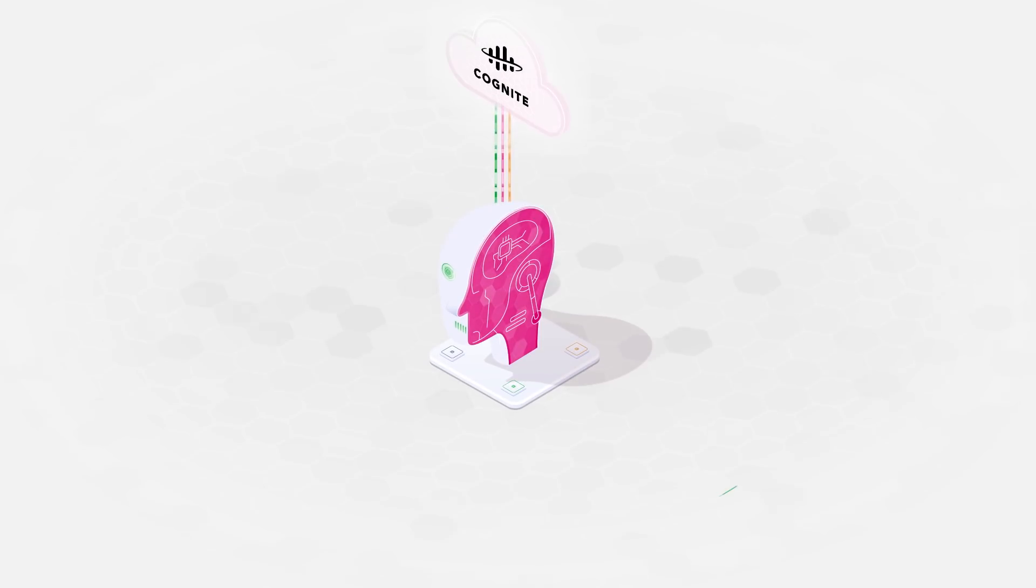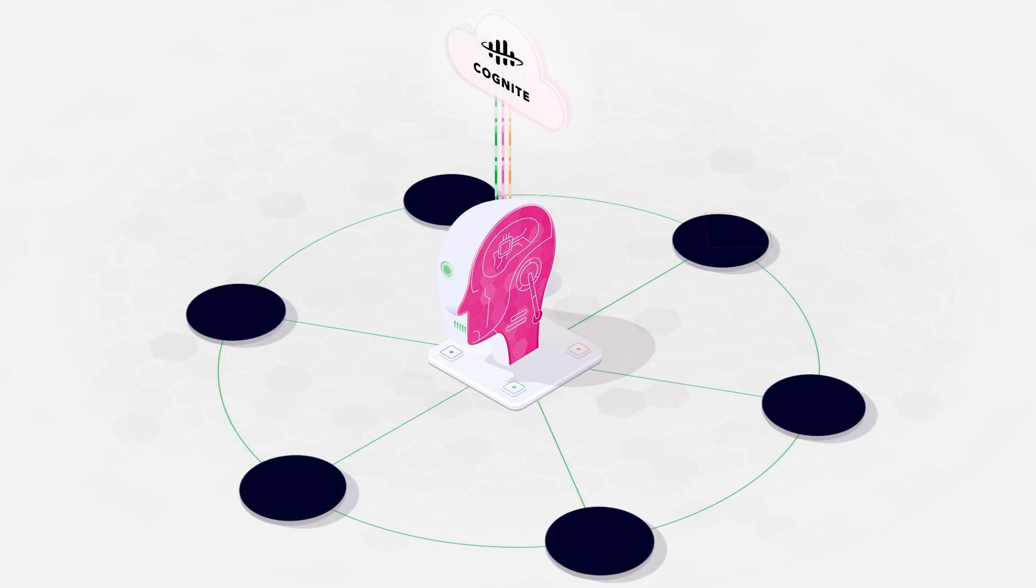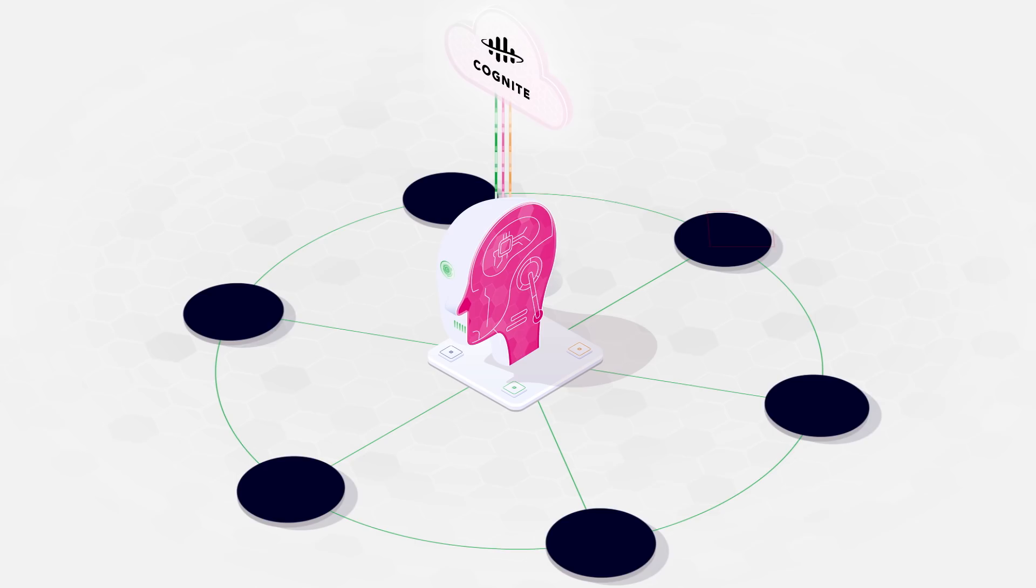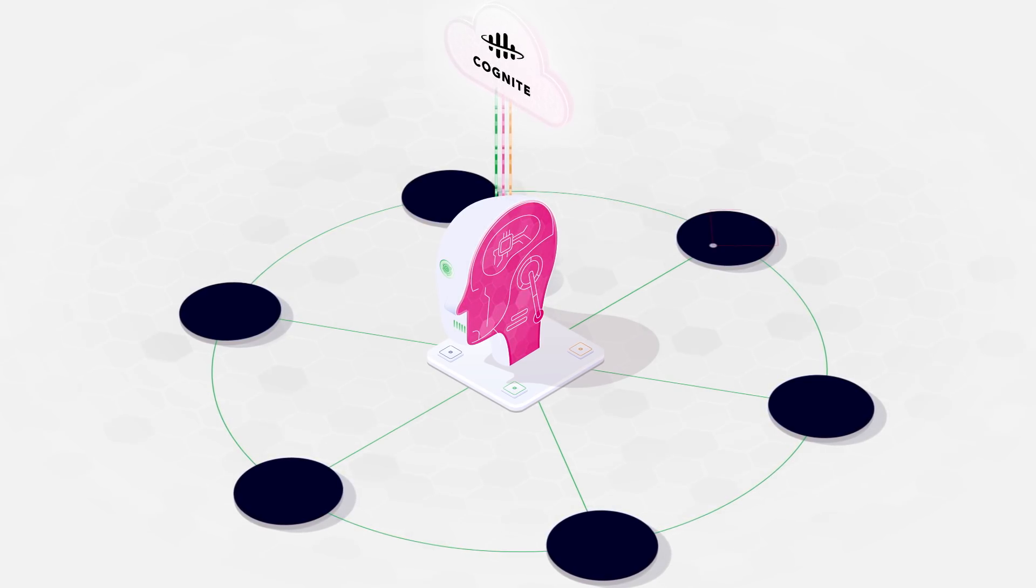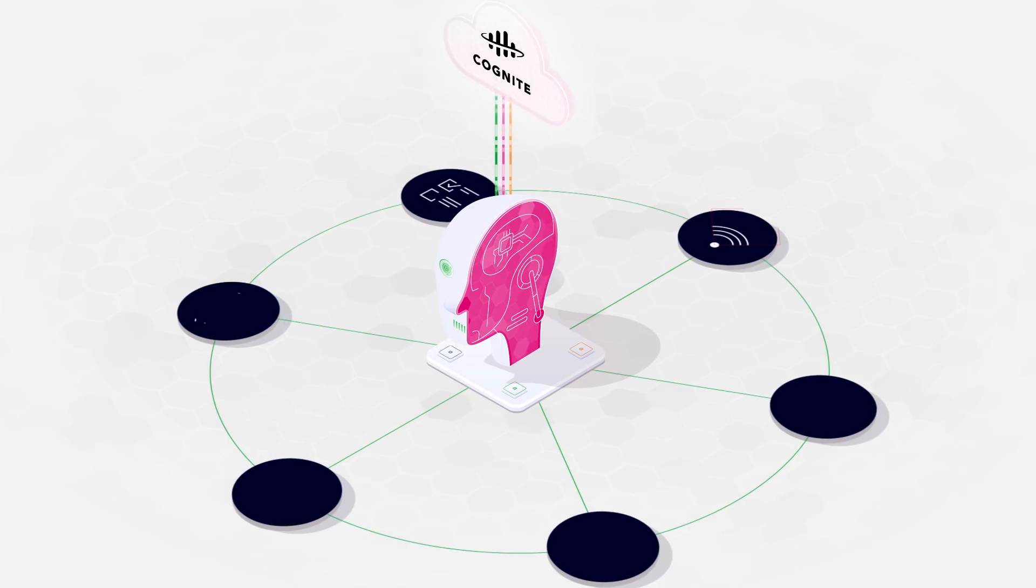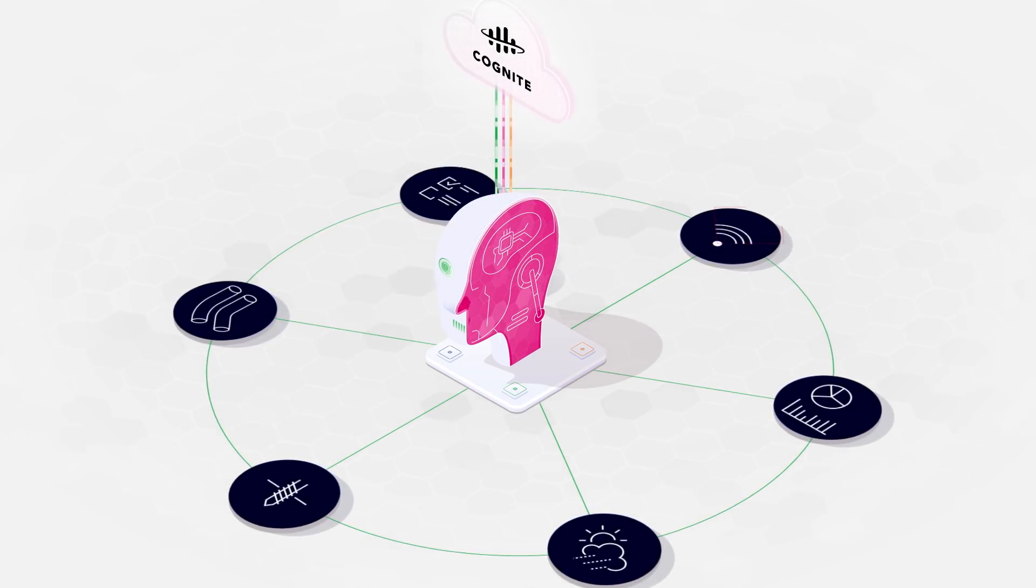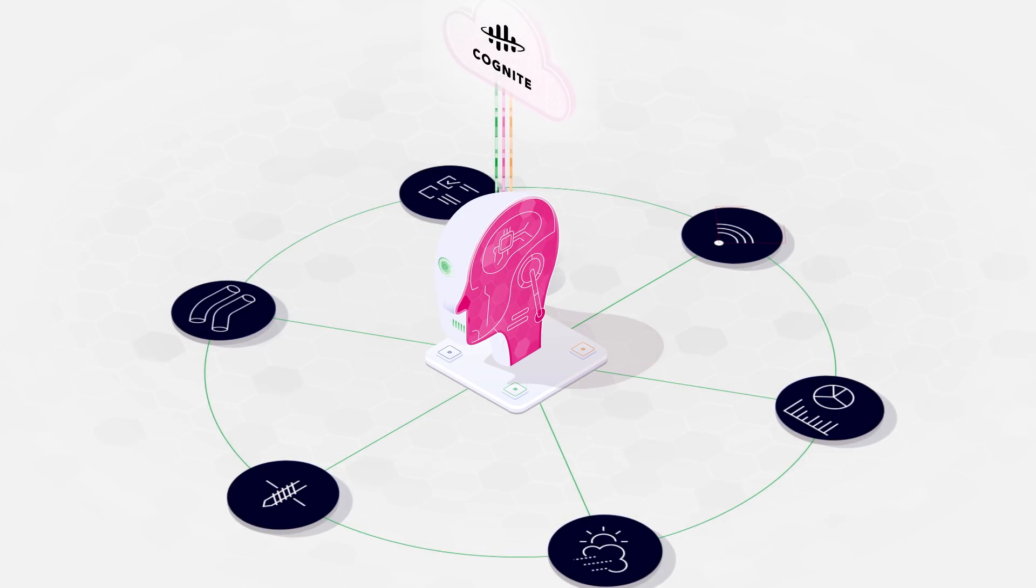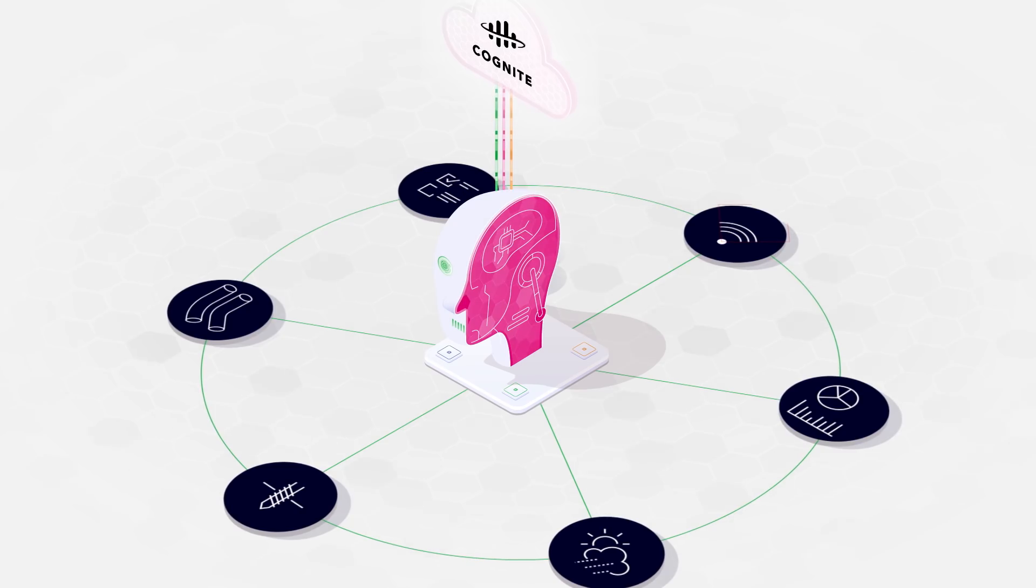With Cognite Data Fusion, data is accessible, intuitively organised, and any authorised user can find the right data for the task at hand. By automatically connecting RKBP data, for example, sensor data, work orders, piping and instrumentation diagrams, weather data, subsurface and well data, and more, Cognite Data Fusion presents us with a digital representation of our industrial reality.